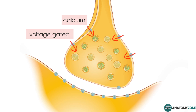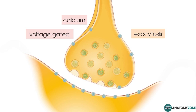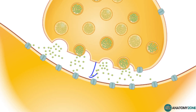When calcium enters the presynaptic ending, the vesicles dock and fuse to the presynaptic membrane. The next thing that happens is exocytosis — the process by which the vesicles fuse to the presynaptic membrane and release their contents into the synaptic cleft. The neurotransmitter then diffuses across the cleft and binds to receptors embedded in the postsynaptic membrane. The ion channel within the receptor opens, allowing ions from the extracellular fluid to enter the postsynaptic neuron, potentially generating another action potential which propagates down the postsynaptic neuron.